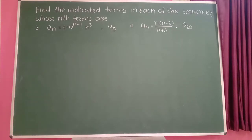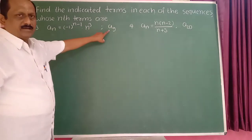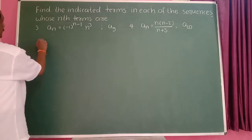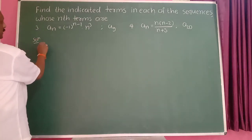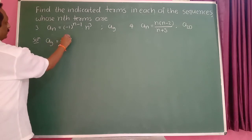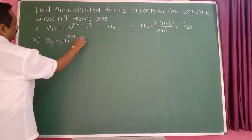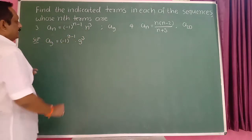Third example: a_n is equal to (-1) raised to (n-1) into n cubed. Find a_9. Therefore, a_9 is equal to (-1) raised to (9-1) into 9 cubed.